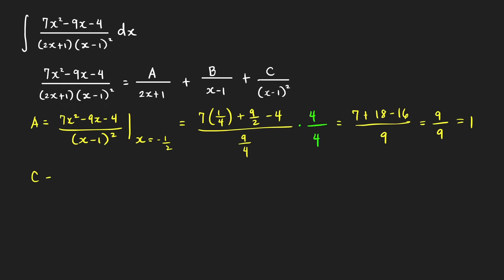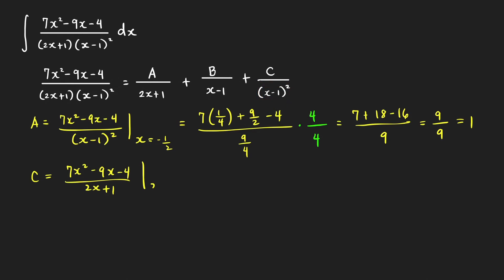To find c using cover-up, we cover the denominator (x minus 1)² and evaluate 7x² minus 9x minus 4 over (2x plus 1) at x equals 1. This gives (7 minus 9 minus 4) over (2 plus 1), which equals negative 6 over 3, so c equals negative 2.